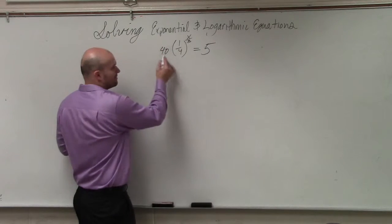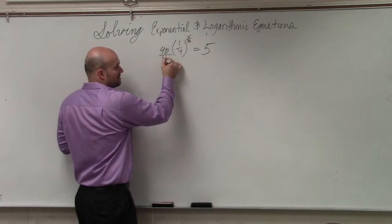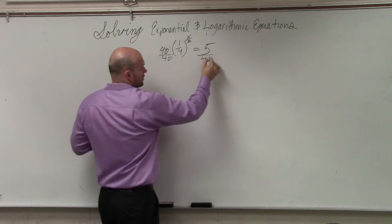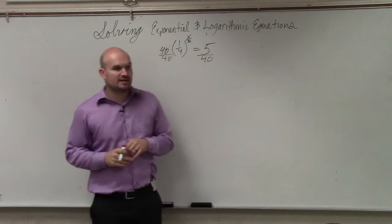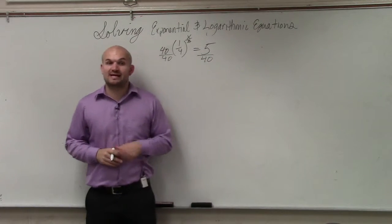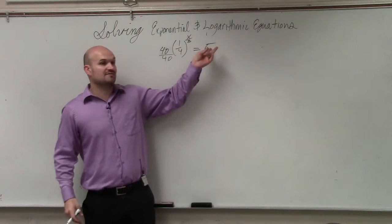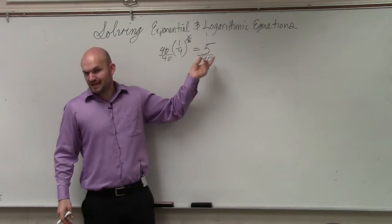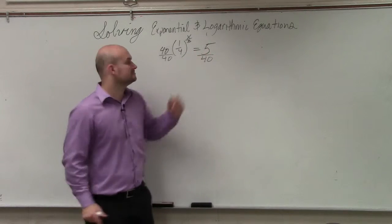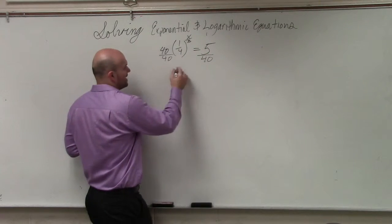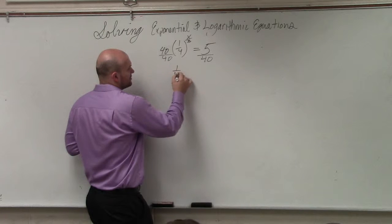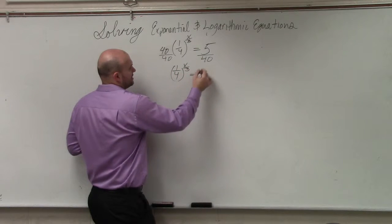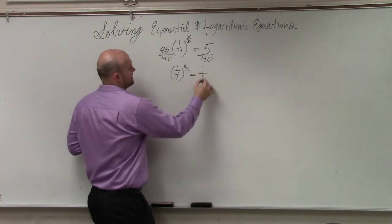So I'm going to get rid of this 40 — I'll divide by 40 on both sides. Hopefully you guys understand that 5 over 40 can be reduced to 1 eighth, because 5 goes into 5 one time, and 5 goes into 40 eight times. So I have 1 fourth raised to the x over 3 equals 1 eighth.